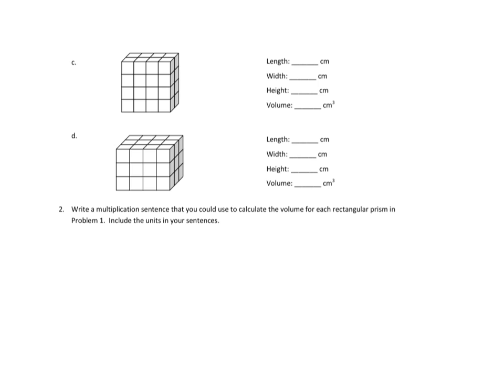The first part here is we're giving representations, and each one of these cubes represents one cubic centimeter. So that means the length, the width, and the height of each cube is one centimeter. So we need to find the length, the width, the height, and finally the volume.